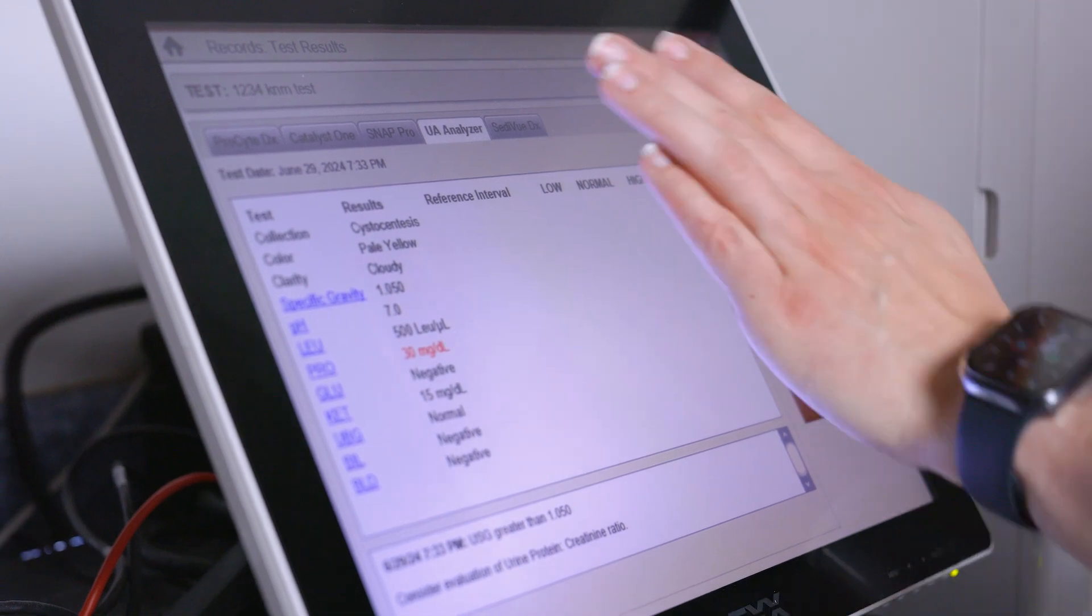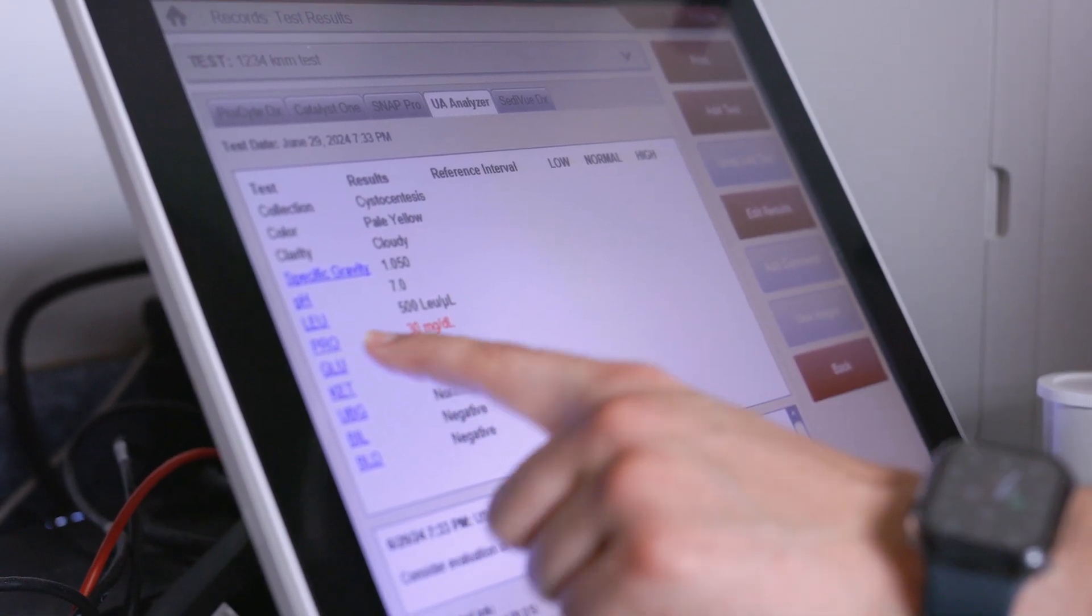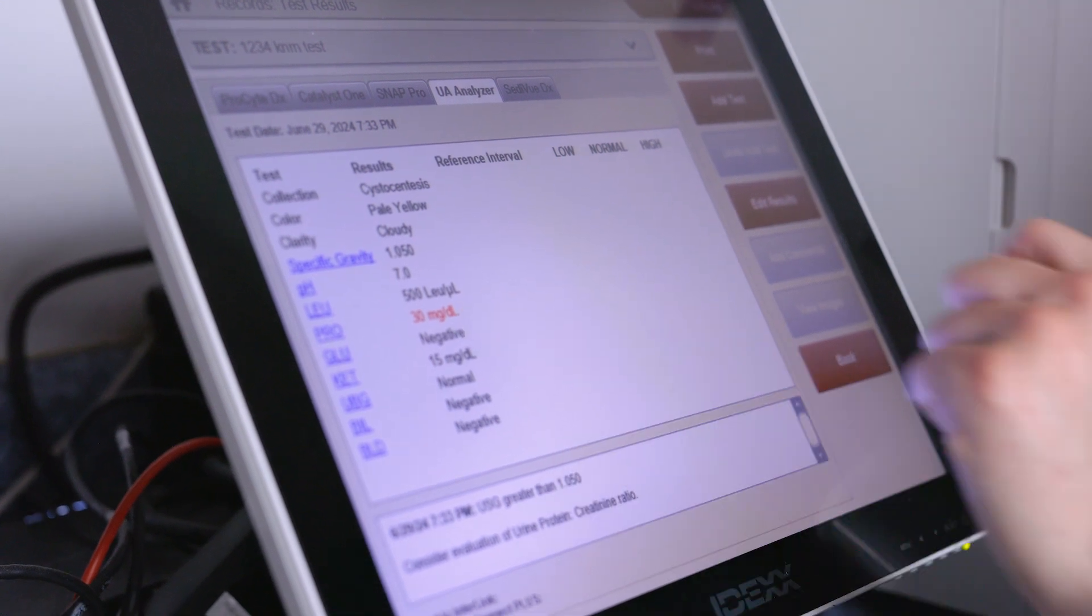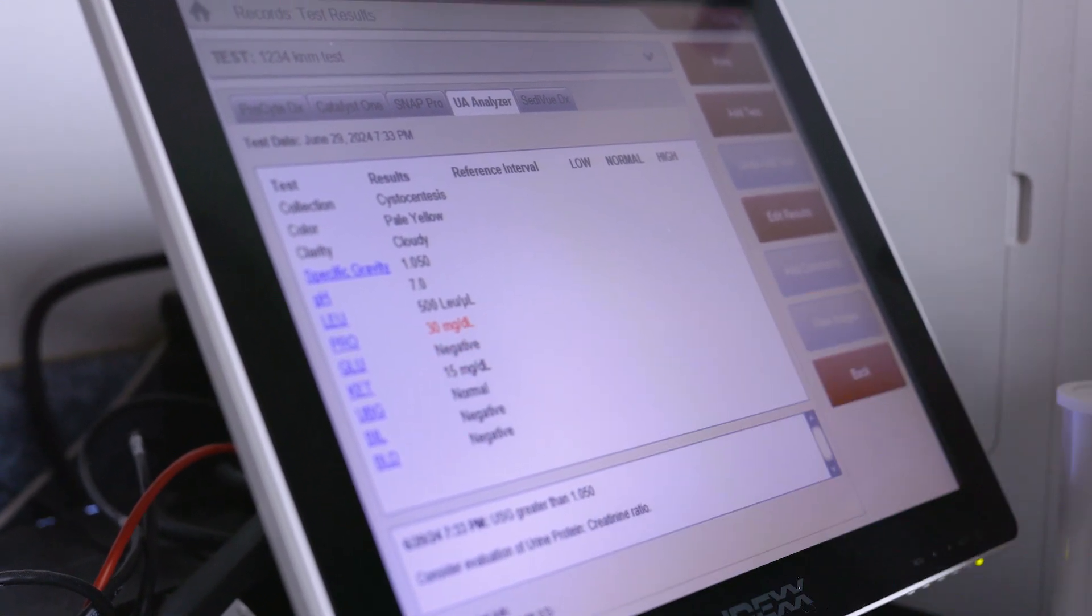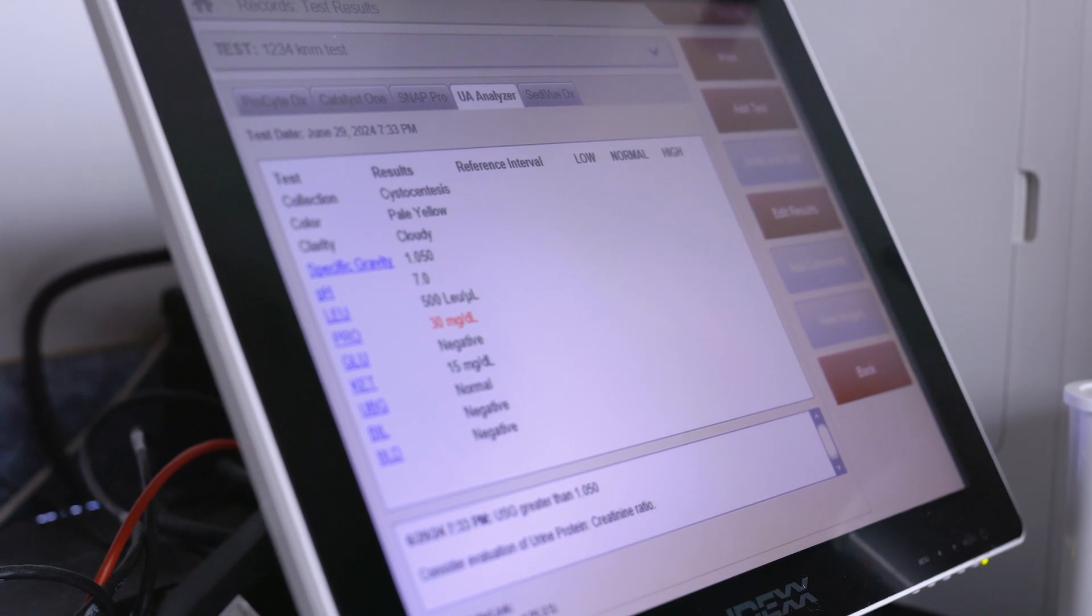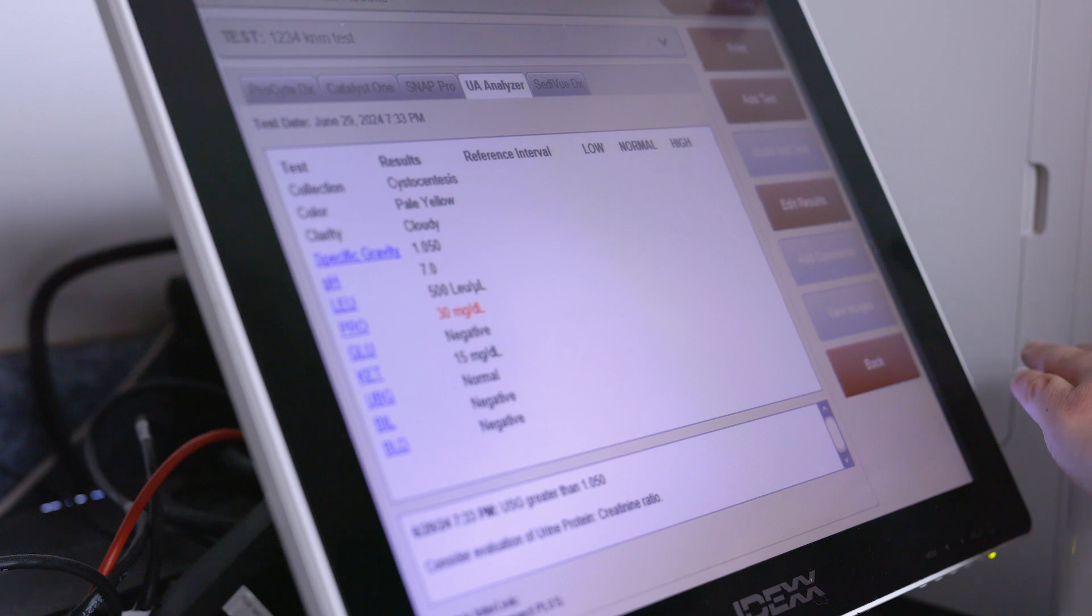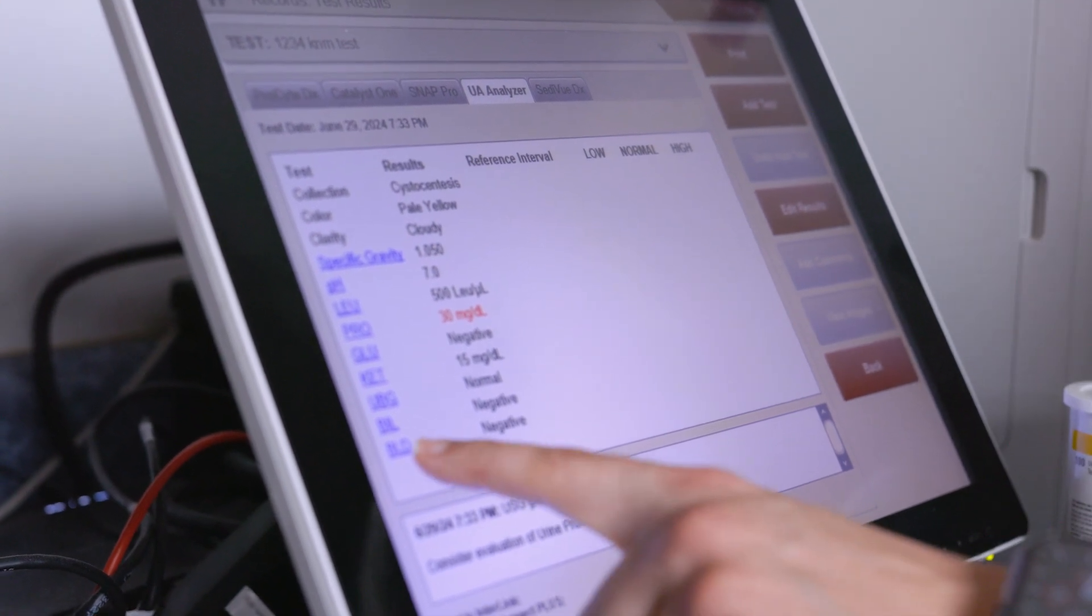And so these are the results from the urine strip. So we can see that an abnormality is noted by the indicated by the red coloring here. So the protein is elevated about 30 milligrams per deciliter, which we saw that when we viewed the strip next to the graph and chart itself with the results.